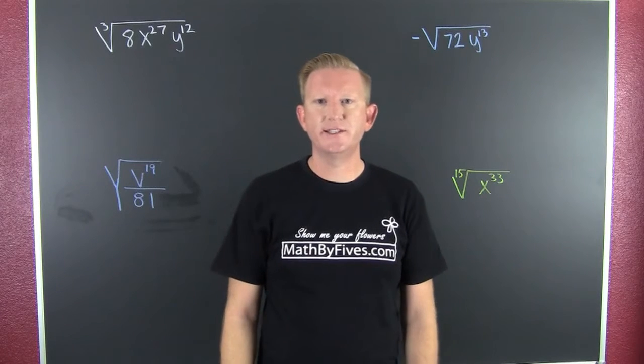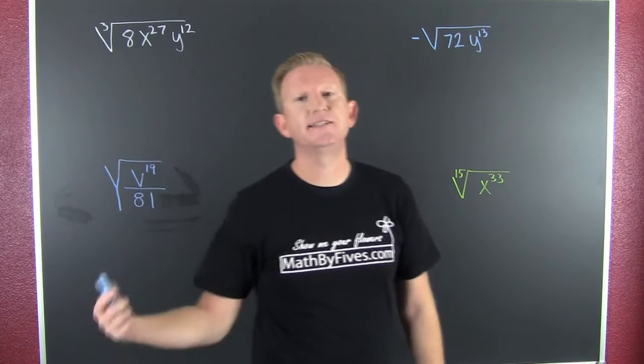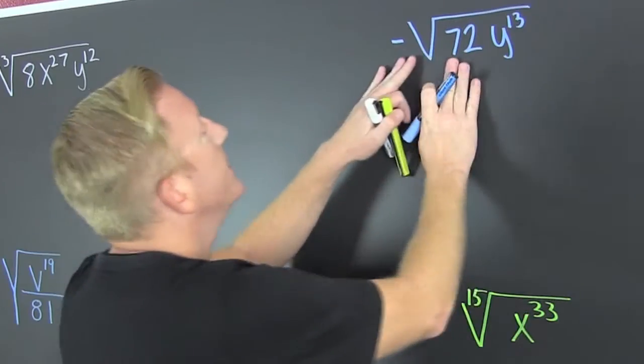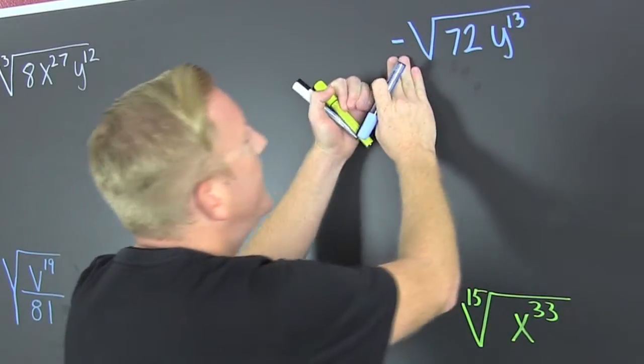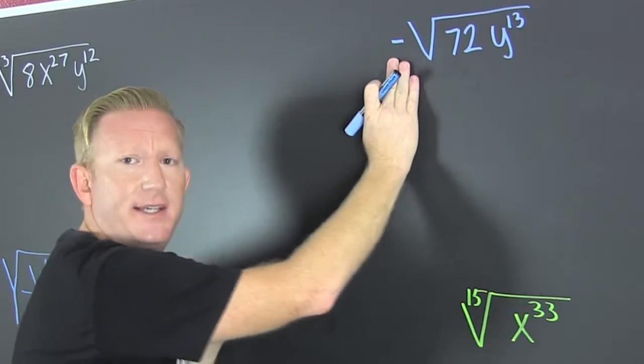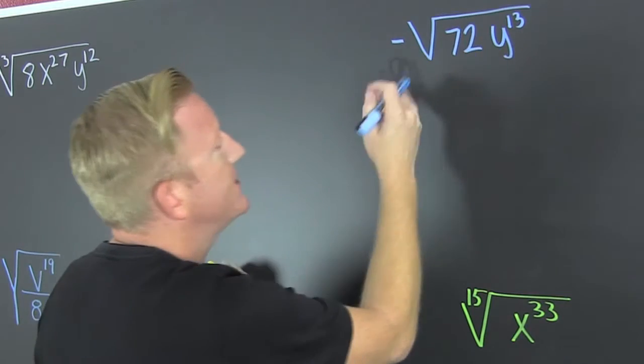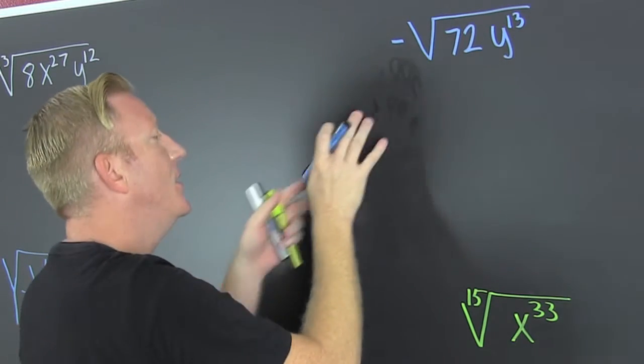We're simplifying rational expressions. Let's get at it. That minus is on the outside. You might think it's unreal, but it's not because the minus is on the outside.